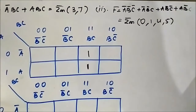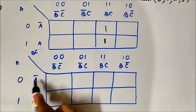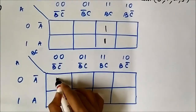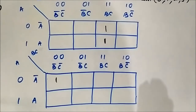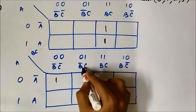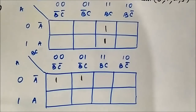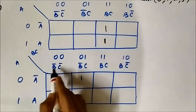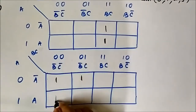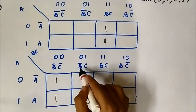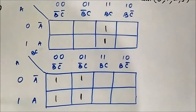First is A̅B̅C̅: A̅ is the horizontal component, B̅C̅ is the vertical component — marked as 1. Next is A̅B̅C: A̅ horizontal, B̅C vertical — marked 1. Next is AB̅C̅: A is horizontal, B̅C̅ is vertical — marked 1. Next is AB̅C: A is horizontal, B̅C is vertical — marked 1. So we have mapped this Boolean expression. This is the mapping for the second expression.